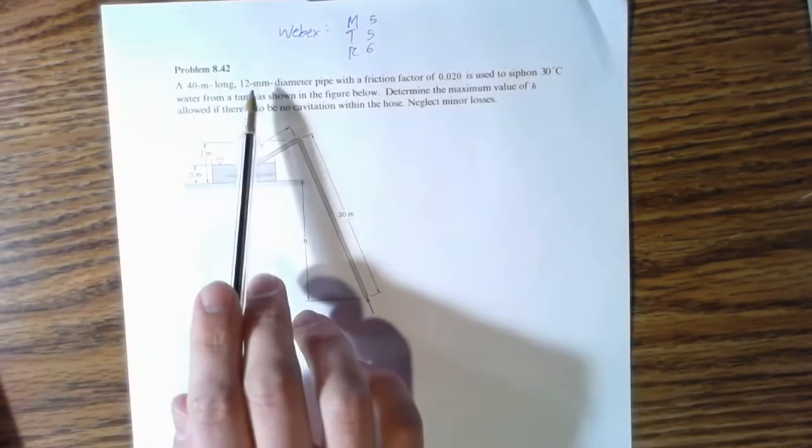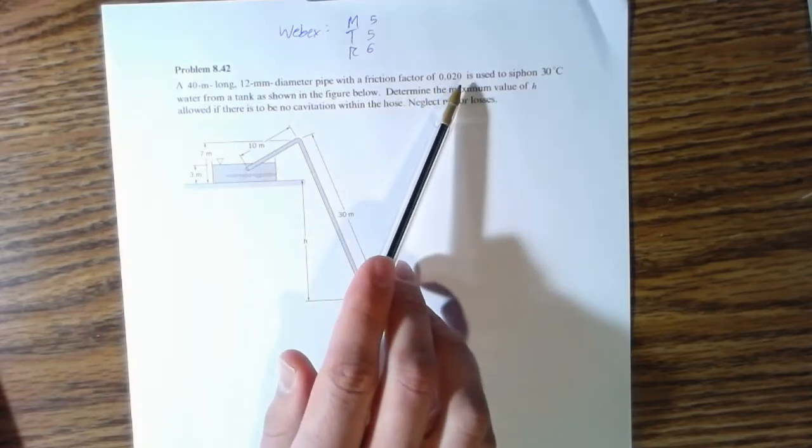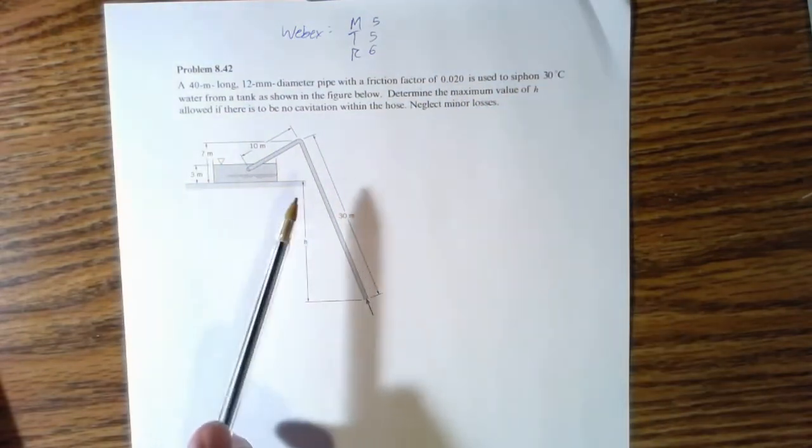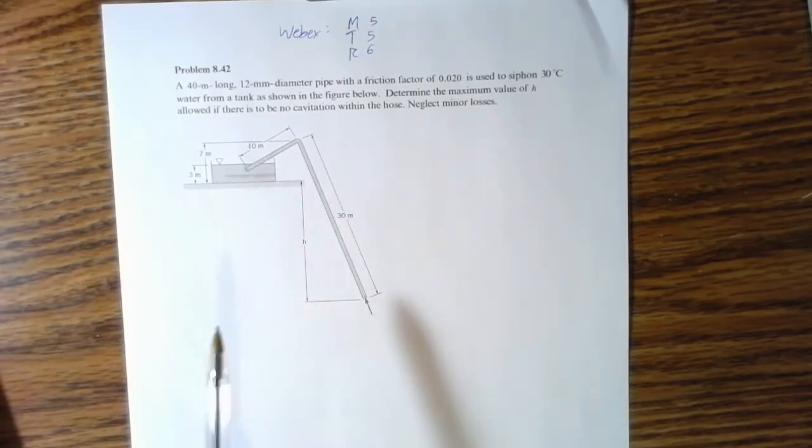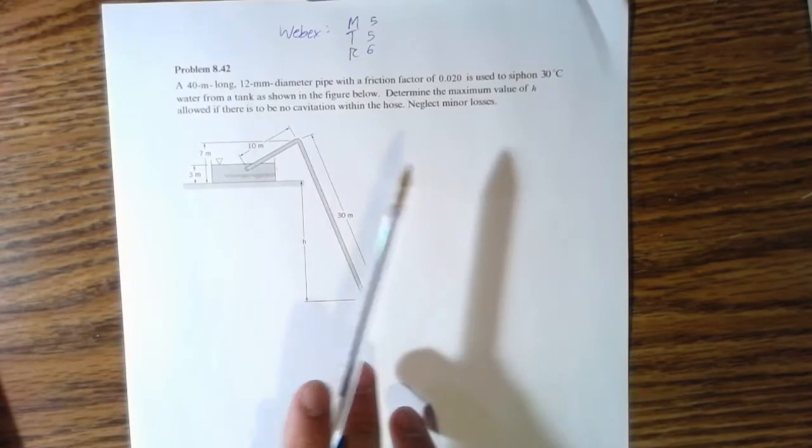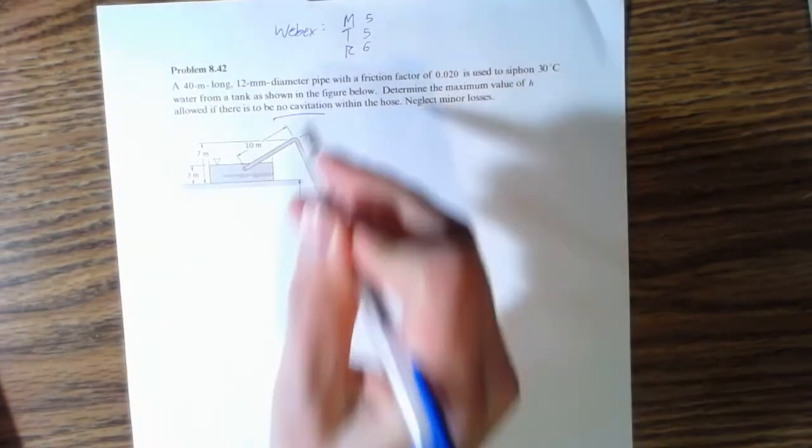We got this 40 meter long, 12 millimeter diameter pipe with a friction factor of 0.02, and it's used to siphon 30 degree Celsius water from a tank as shown below. Determine the maximum value of h allowed if there's to be no cavitation within the hose.